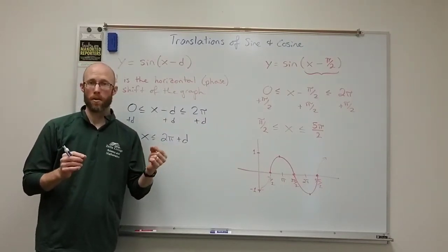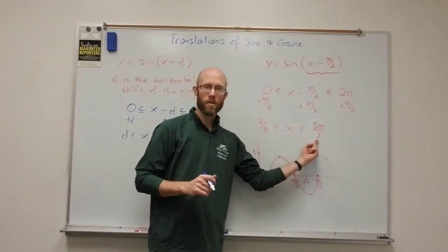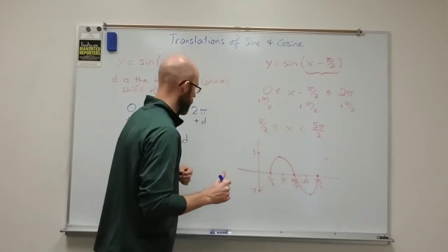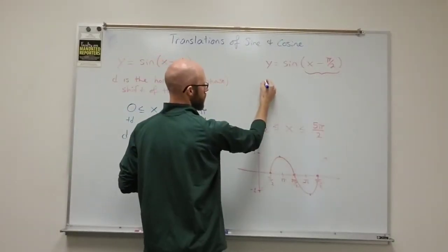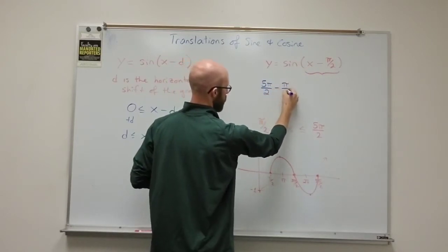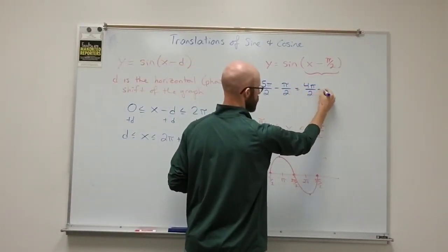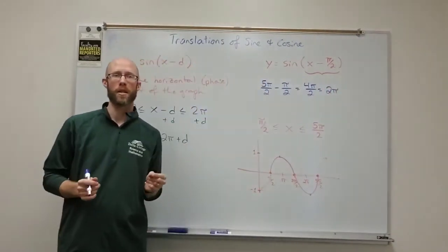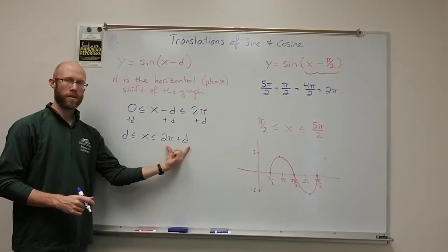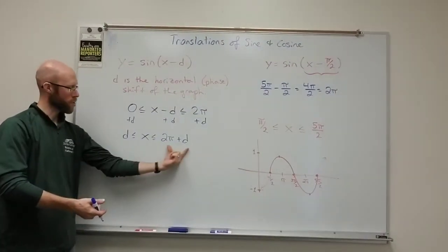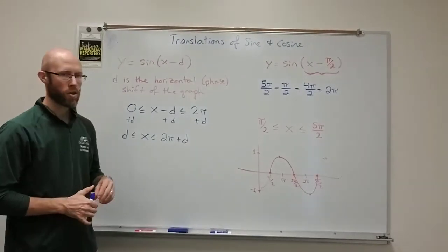If you solve for x, adding d gives: d ≤ x ≤ 2π + d. That gives a phase shift of d units. The period doesn't change — you can find it by subtracting the endpoints: final minus initial. In our example, 5π/2 − π/2 = 4π/2 = 2π, so the period is still 2π. Generally, (2π + d) − d = 2π, so the period is always 2π when there's no coefficient on x.